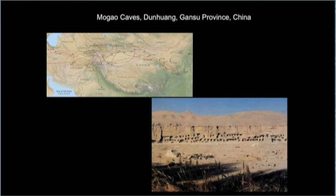The Mogao cave sites flourished between the 4th to 14th centuries and comprise 735 caves carved into the eastern side of Mingsha Mountain. The roughly 200 caves in the northern end were mostly undecorated and used for the habitation of monks who resided at the site. To the south, there were another 492 caves, and those were installed with mural paintings as well as clay statues.